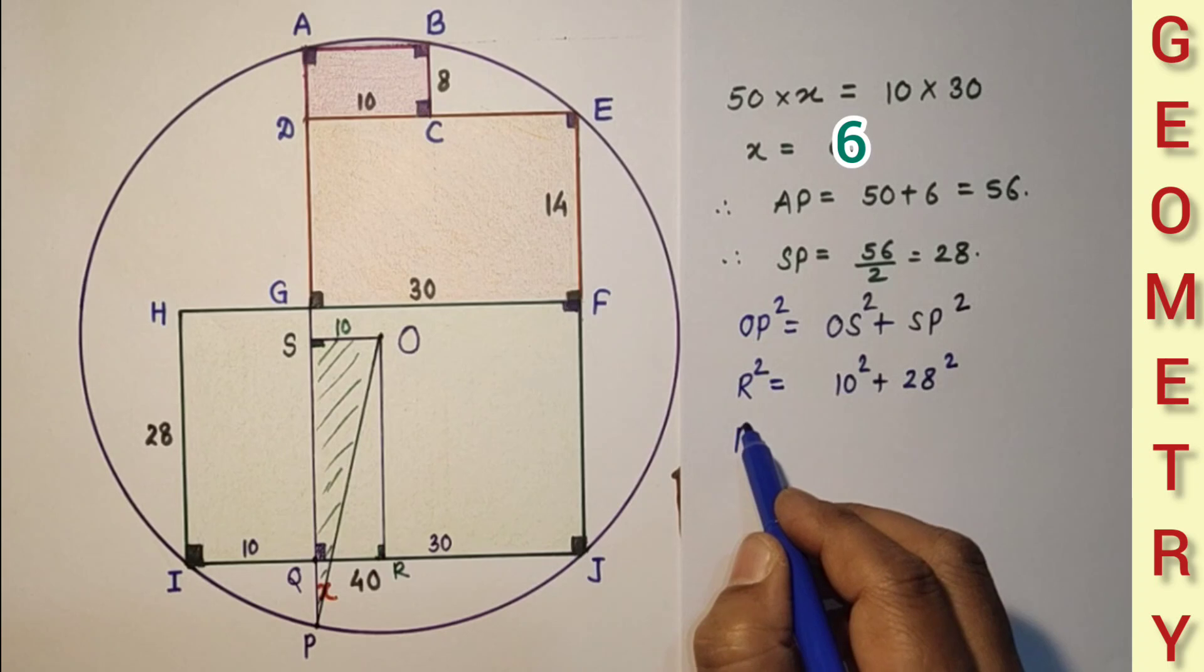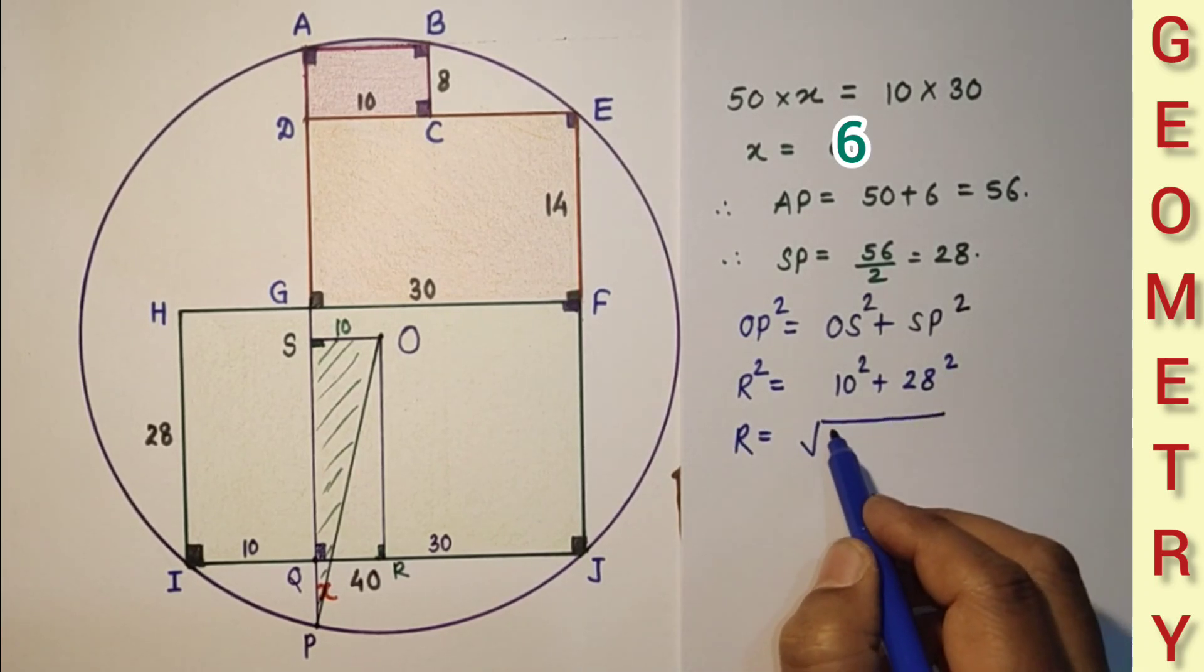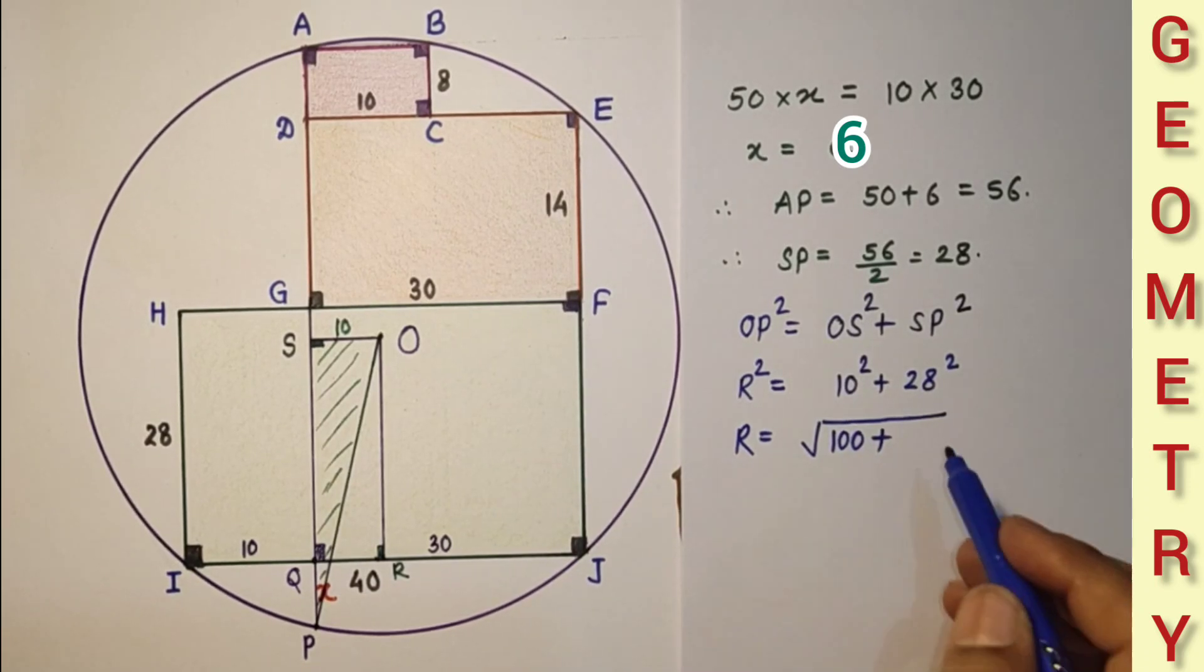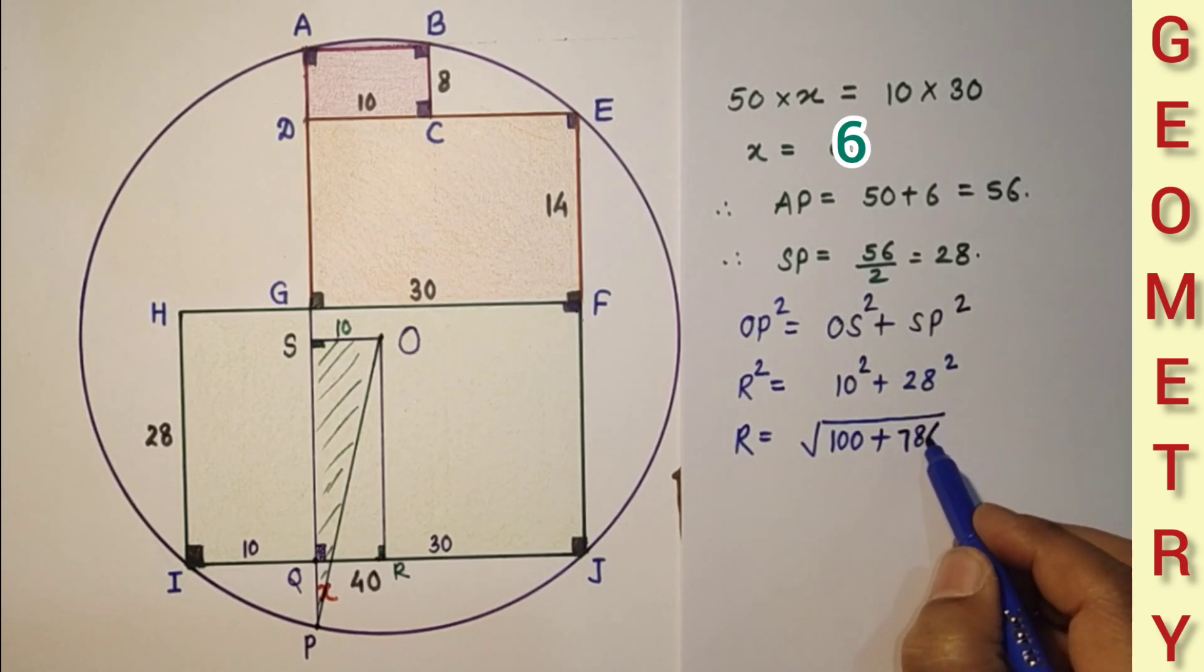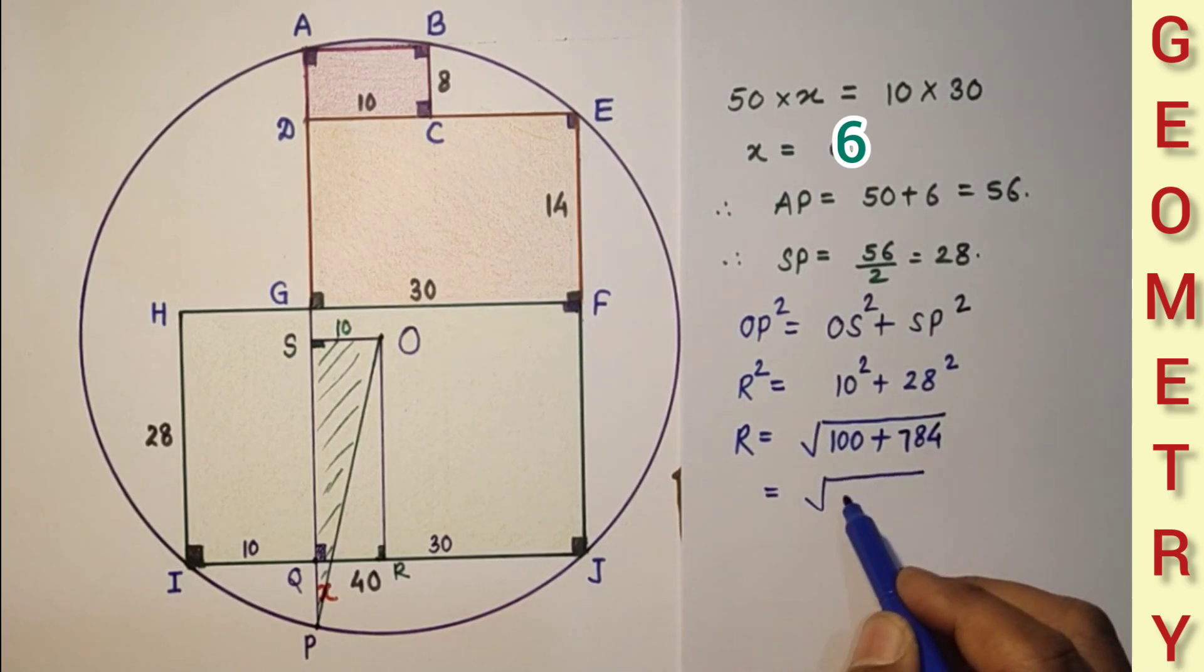So therefore R is equal to square root of 100 plus 784, and that is equal to square root of 884.